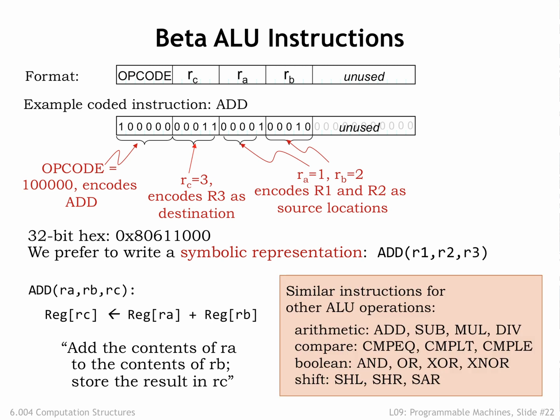Here's the list of mnemonics for all the operations supported by the Beta. There is a detailed description of what each instruction does in the Beta documentation handout. Note that all these instructions use the same four-field template, differing only in the value of the opcode field. This first step was pretty straightforward — we simply provided instruction encodings for all the basic operations provided by the ALU.